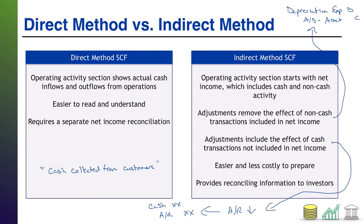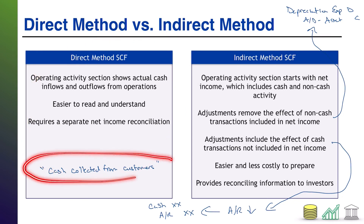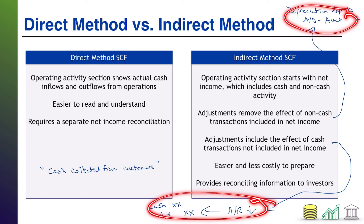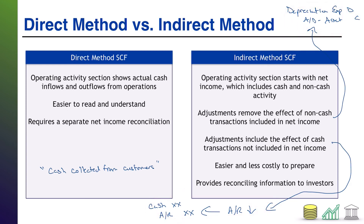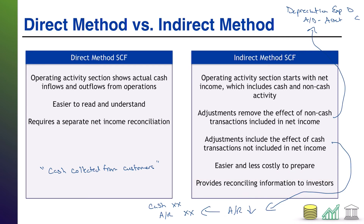From the company's perspective, the indirect method is definitely easier and less costly to prepare because they don't have to create a separate schedule. But relative to the direct method, it's going to be harder for investors to interpret — instead of seeing a direct line like 'cash collected from customers,' investors see net income adjusted for depreciation, adjusted for a decrease in AR, and so on, which is more difficult to interpret. However, it does provide the reconciliation between net income and cash flows, which is beneficial to investor decision-making and therefore still a useful thing for companies to do.